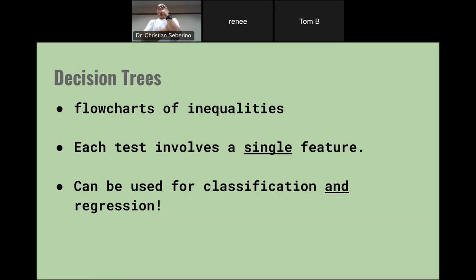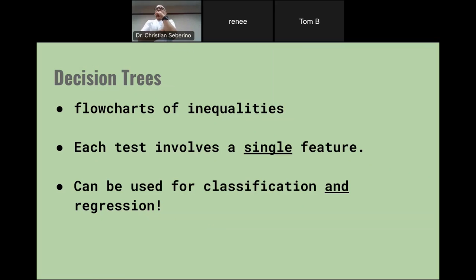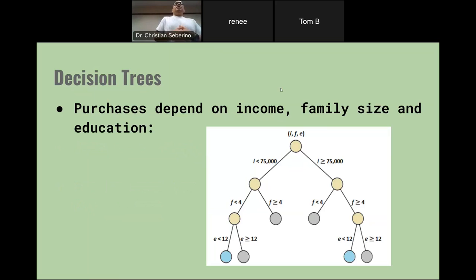Classification, you may recall, is trying to detect certain classes — like detecting whether a picture is of a cat, a dog, or a wolf. Regression would be like trying to predict a stock price, where there's not just a few categories but a continuous range. A decision tree is really a nice, easy-to-understand idea — but really powerful. That's why I like it.